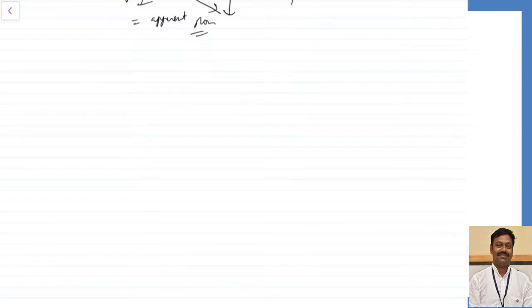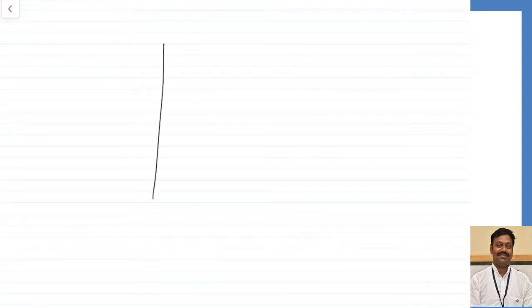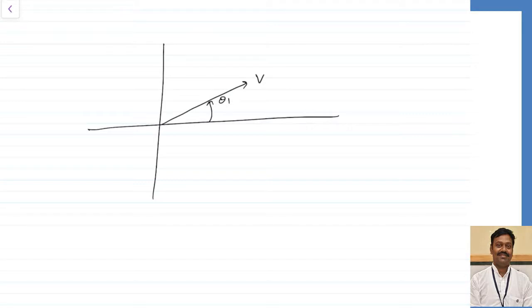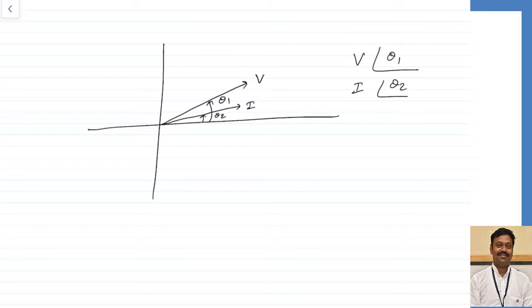Now I want to use phasor algebra to calculate the active, reactive, and apparent power. Let us assume voltage V is at an angle θ₁ and the current is lagging, at an angle θ₂. So V leads by some angle. As per the power calculation, I want P = V·I·cos(θ₁ − θ₂) — the cosine of the phase difference between voltage and current — and the reactive power Q = V·I·sin(θ₁ − θ₂).